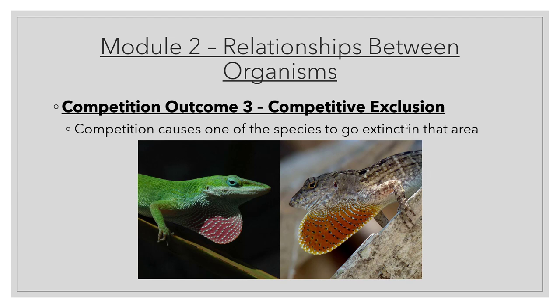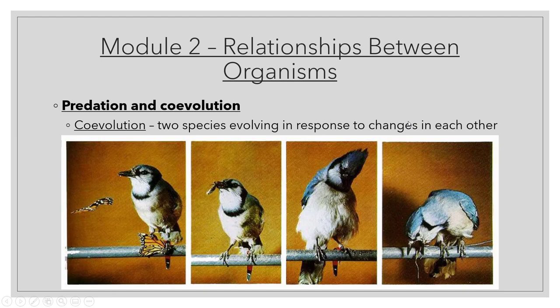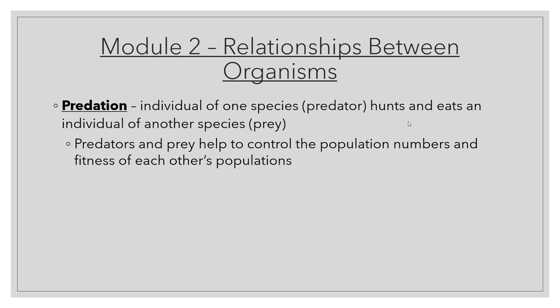Competition outcome number three is competitive exclusion — a fancy word for going extinct. We actually see this happening right now in Florida. On the left is the green anole, a lizard native to Florida; on the right is the brown or Cuban anole, an invasive species that is out-competing the green anole. When the speaker was young you only saw the green ones — now it's rare to see them, and you see the brown ones all the time. The brown anole has out-competed the green anole to the point that the green anole is going extinct in Florida.